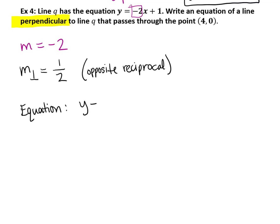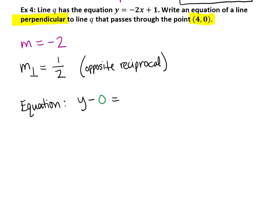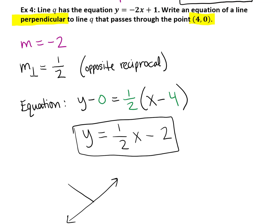So the equation of our line using point-slope form would simply be y minus 0 equals the slope one-half times x minus 4. If you distribute the one-half and simplify and put this in slope-intercept form, we get the equation y equals one-half x minus 2. So that would be the equation of the line that would be perpendicular to line q.